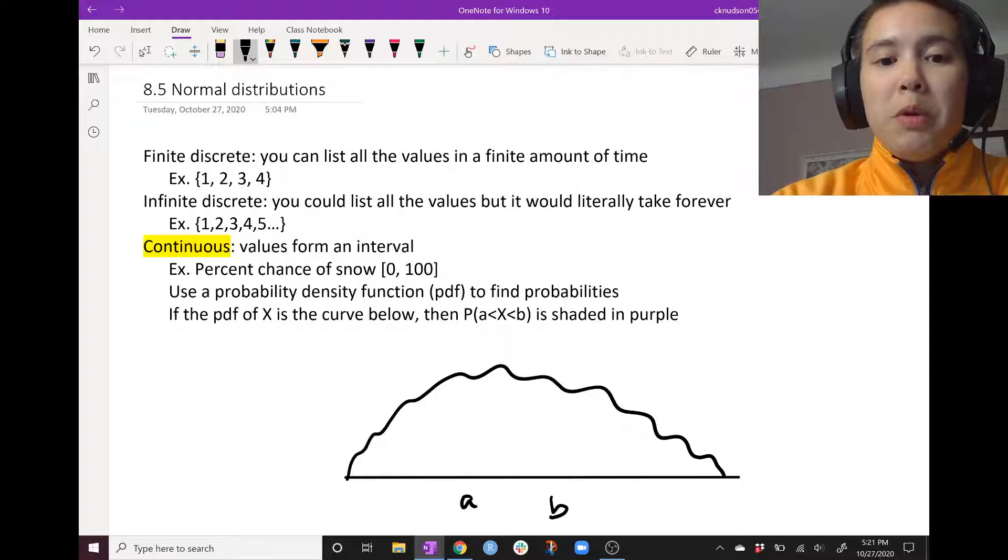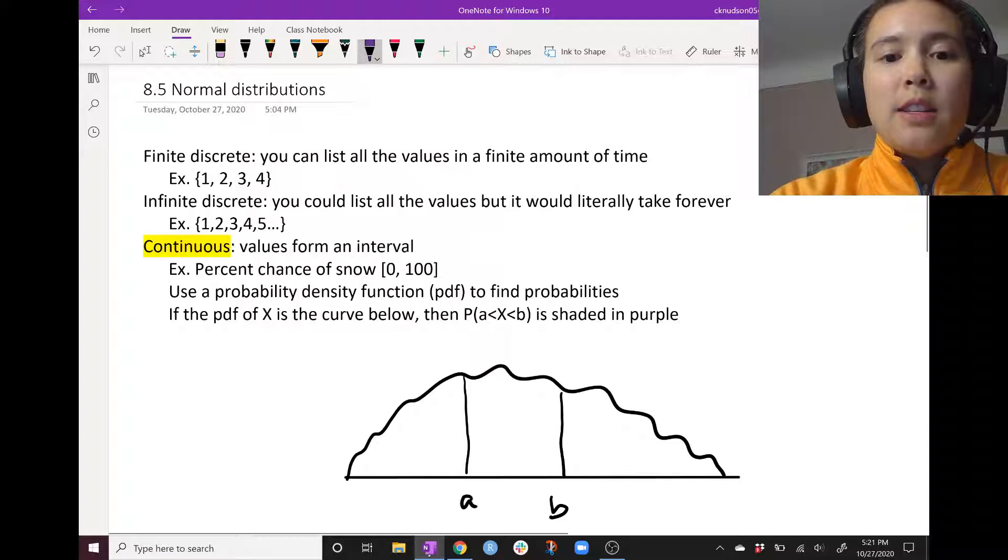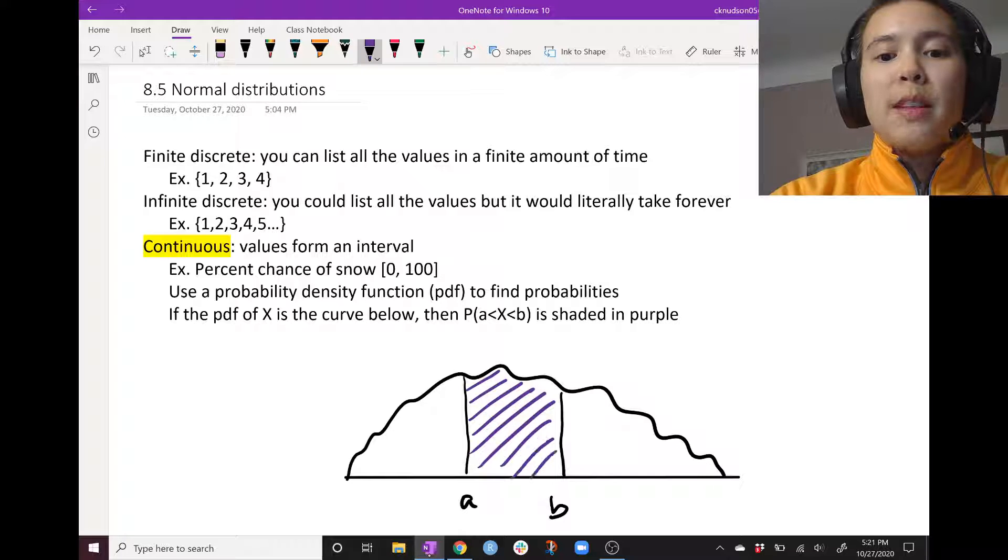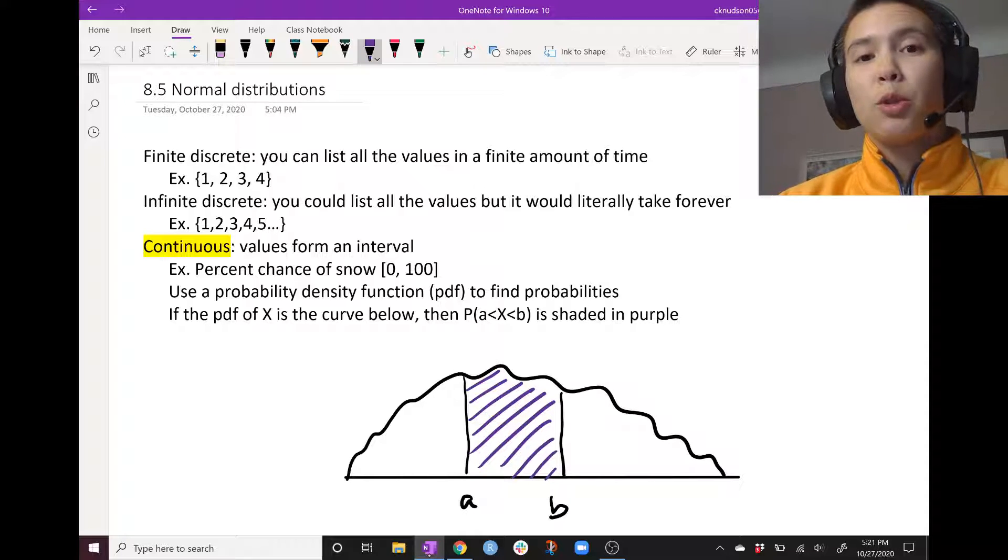Then what we would need to do is mark off a, mark off b. And this purple area right there would represent the probability that x is between a and b.